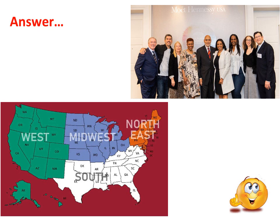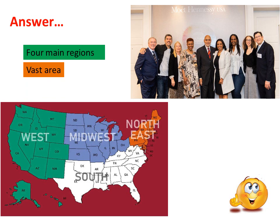Here is my answer. The country has four main regions and it is a vast area. The country is open to both east and west of the world. For example, when we cross the Atlantic Ocean, the European and African continents are there — countries like Germany, France, and Italy. To the other side, when we cross the Pacific Ocean, the eastern countries like the Hawaiian Islands, China, and Korea are there.